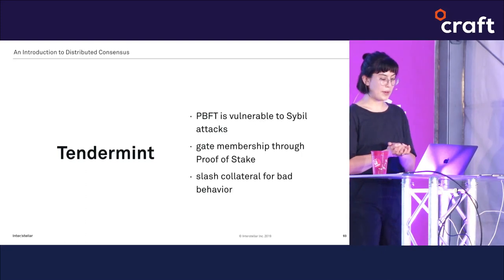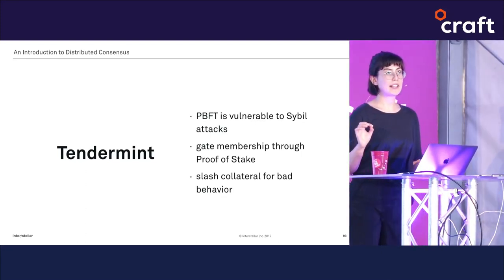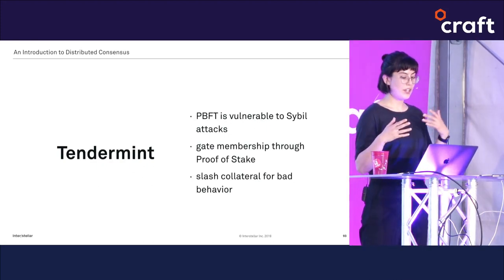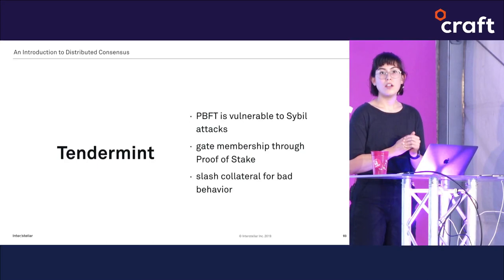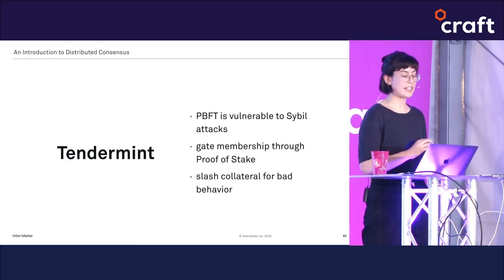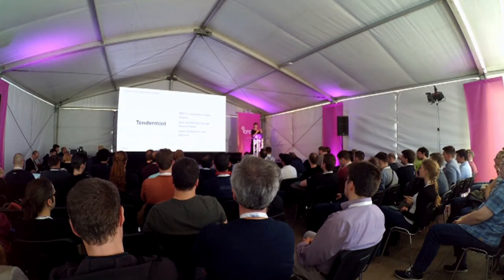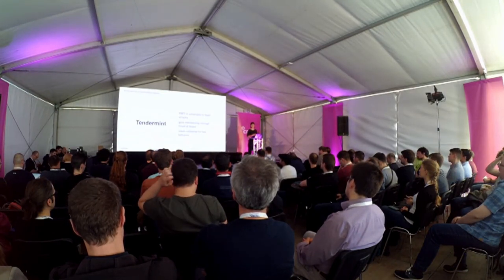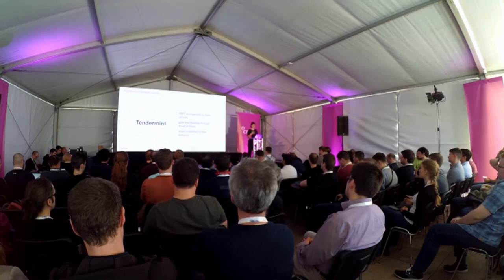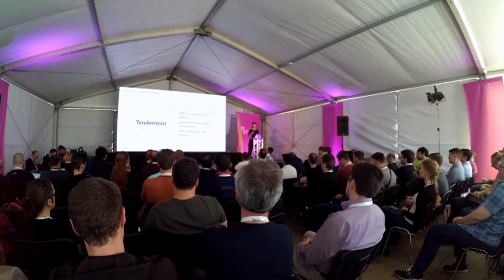The big problem with PBFT is that it's vulnerable to Sybil attacks where an attacker creates many nodes that overpower consensus rounds with malicious votes. Tendermint protects against these attacks by using proof of stake: a node must first put up some collateral before it can become a proposer, which really increases the cost of entry into the network. If it behaves maliciously, its collateral is slashed — it just becomes very expensive to attack the network.